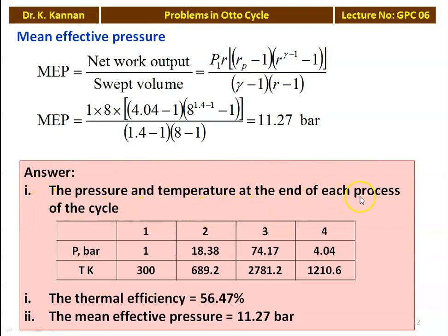Answers: Pressures — P1 equals 1 bar, P2 equals 18.38 bar, P3 equals 74.17 bar, P4 equals 4.04 bar. Temperatures — T1 equals 300 K, T2 equals 689.2 K, T3 equals 2781.2 K, T4 equals 1210.6 K. Thermal efficiency is 56.47 percent and mean effective pressure is 11.27 bar.